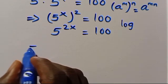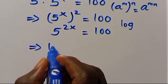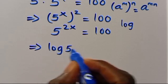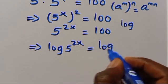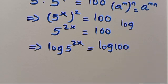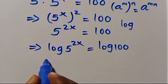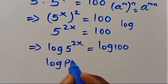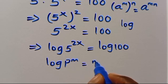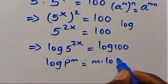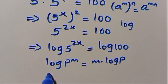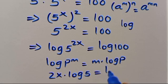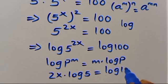From here, let's introduce log to both sides of this expression. We are going to have log of 5 to the power of 2x equals log 100. Recall that log of p to the power of m equals m multiplied by log p. So we have 2x multiplied by log 5 equals log 100.